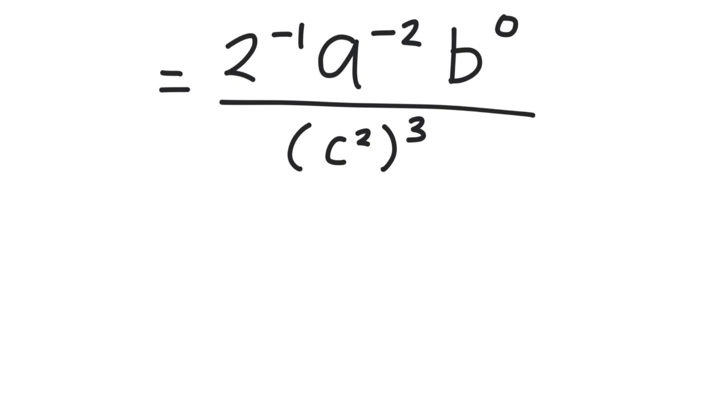Next, we see negative and zero exponents here. To learn more about them, you can refer to our YouTube video which explains the negative and zero exponents deeply. So, 2 to the power of negative 1 becomes 1 over 2, a to the power of negative 2 becomes 1 over a squared, and b to the power of 0 becomes 1. This equation equals 1 over 2a squared times c squared to the power of 3.